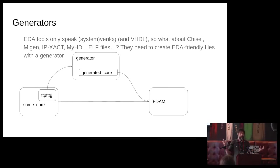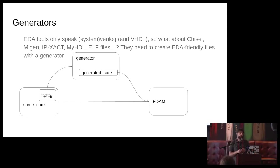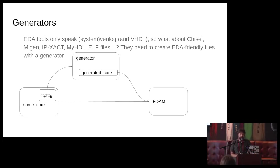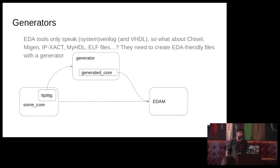The generator takes something and converts it to something the EDA tools can understand. It can compile an ELF file down to a hex file readable by $readmemh in Verilog, or take an IP-XACT file and create a top-level wrapper, or run MyHDL to produce a Verilog file. In your core you have a TTPTG which passes things to the generator. You get a generated core back, dynamically inserted into the FUSUC dependency tree. So from the outside, FUSUC can support MyHDL and Chisel via generators — which is essentially a plug-in system.